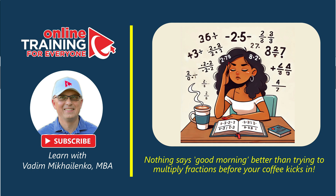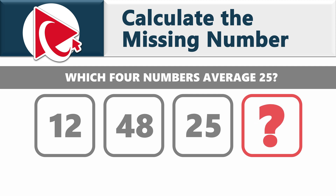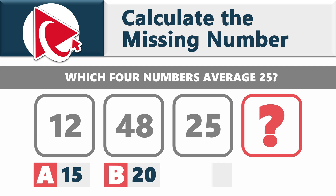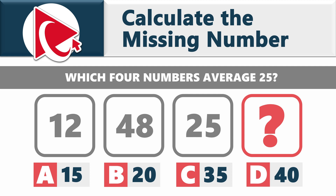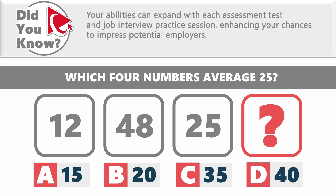You need to determine which four numbers average 25, but you're only presented with three numbers: 12, 48, and 25. The fourth number is missing, and you need to calculate and select it from four choices: choice A — 15, choice B — 20, choice C — 35, and choice D — 40. Note: you can't use a calculator. Take a moment to solve this, then we'll compare answers.